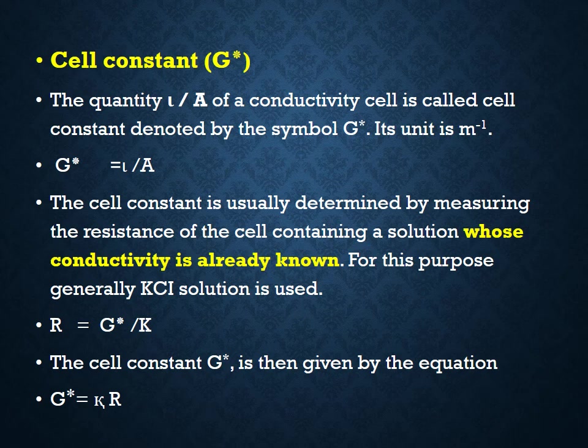For this purpose, generally a KCl solution is used. From R is equal to G star by k, the cell constant G star is given by the equation G star is equal to k into R. Here, k is the conductivity, which is already known for the KCl solution, and R is the measured resistance of the solution.